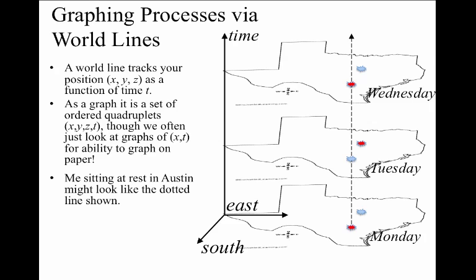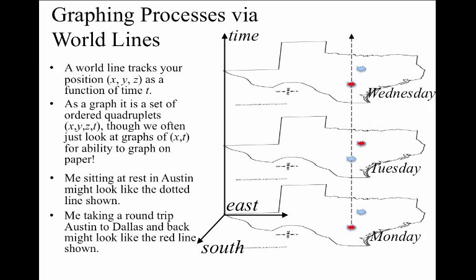But the other world line, the one that describes my round trip from Austin to Dallas and back to Austin, might look more like the red line here. It's got a kink in it. So world lines describe a history of a set of events, in this case, me making a round trip.